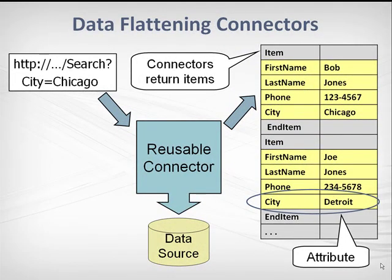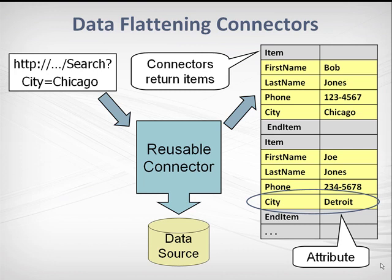Let's look at how these connectors work. Imagine a connector that calls a customer database to search for all customers living in a given city. The connector gets a request that includes a city parameter, and it automatically generates the specific kind of query required by the backend data source. The connector calls the data source and formats the result as a list of items. Every RSS Bus connector returns its results as a simple list like this, no matter how complicated the backend data source might be. We call this process data flattening.